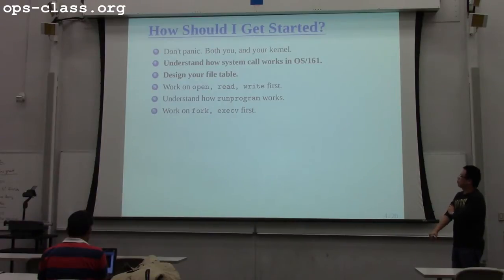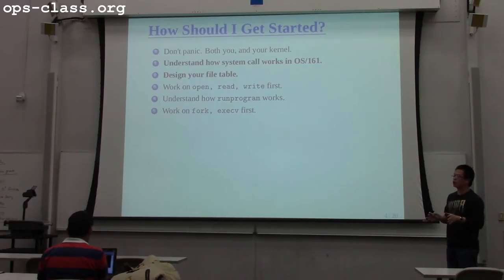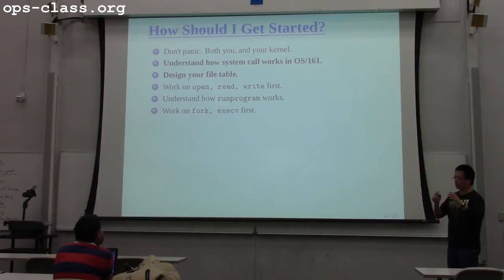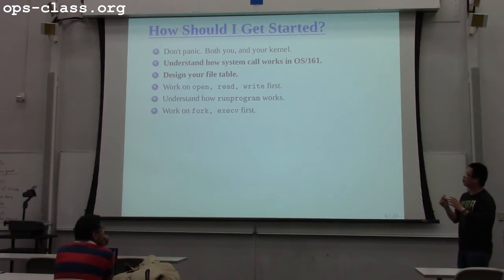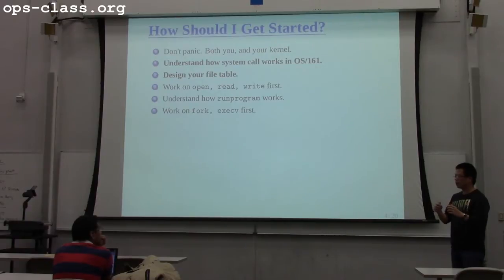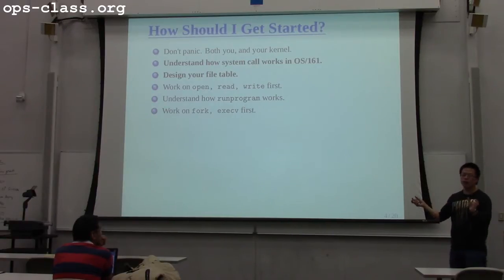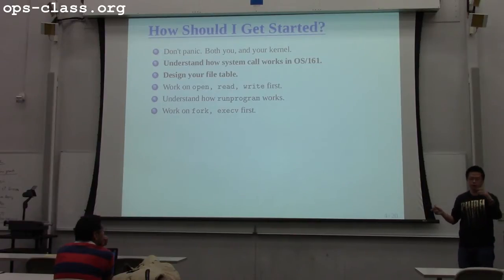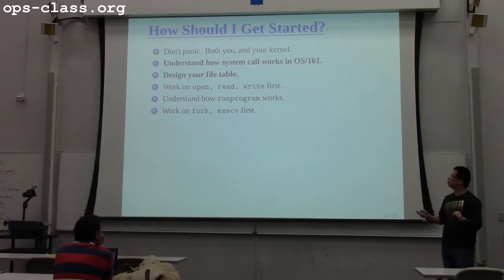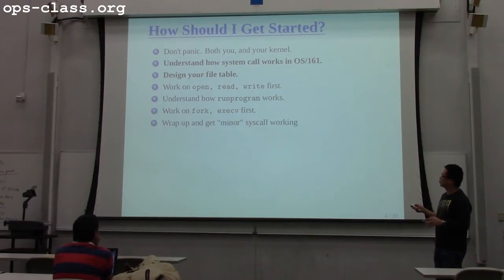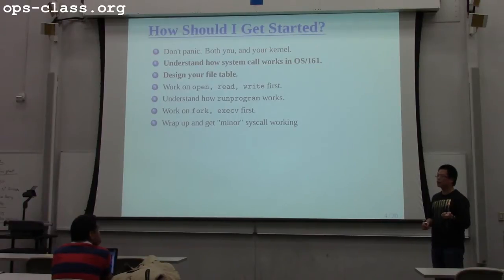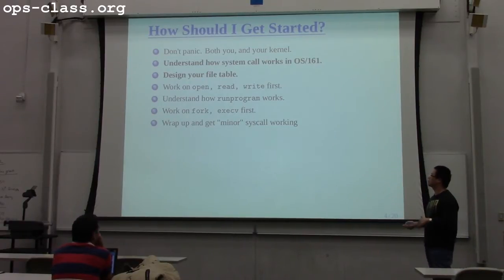For the process-related system calls, I would suggest you work on fork and exec first. Fork is the process of creating a new process. Exec is the way to actually replace the current thread with a whole new thread. After fork, the parent and child thread are both there; you want to do the exec on the child thread so the child can actually do something else. Once you've got all this done, it's time to wrap up and get all the minor syscalls working — like getcwd, lseek in the file syscalls, and wait and exit in the process syscalls.